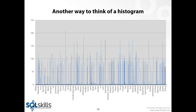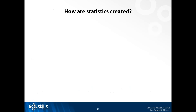The histogram tells us that for the last name Alexander on the left, we have a pretty high number, but coming across to the right for something like TN, we have a very small number. This tells us how that data is distributed throughout the column. Anywhere you have a statistic on a column, you have this type of information within SQL Server, and the optimizer uses that information.